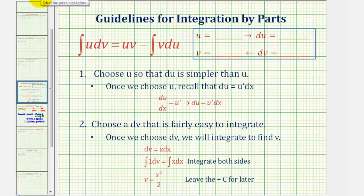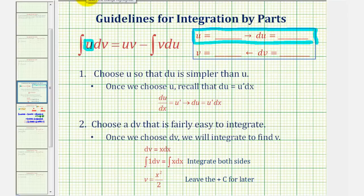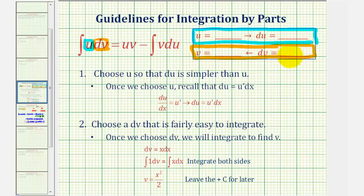The idea is we'll let part of the integrand be equal to u. Once we identify u, we'll differentiate to find du. The remaining part of the integrand will be equal to dv. Once we identify dv, we'll integrate in order to find v. Once we have all four of these parts, we can apply the integration by parts formula, and the idea is this resulting integral would be easier to integrate.